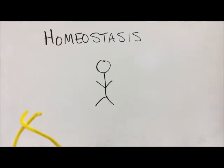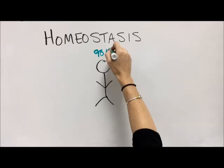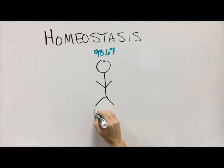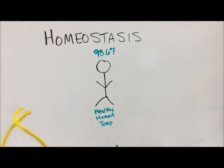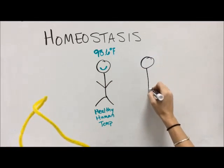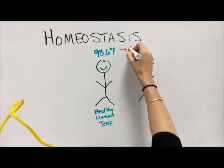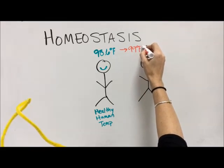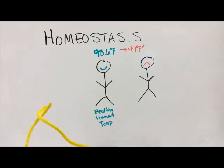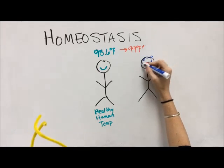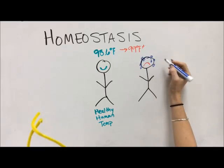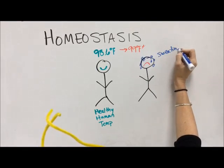Here we have a human, and our internal environment temperature — the healthy human temperature — is 98.6 degrees Fahrenheit. If you get above 99, they say that you have a fever, and the farther above 99 the worse off you are.